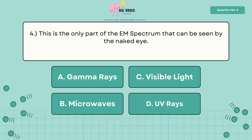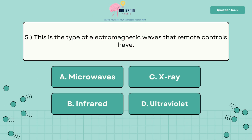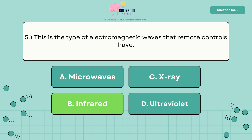Four, this is the only part of the EM spectrum that can be seen by the naked eye. The answer is letter C, visible light. Five, this is the type of electromagnetic waves that remote controls have. The answer is letter B, infrared.